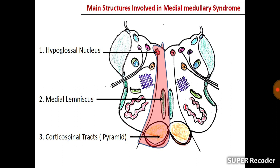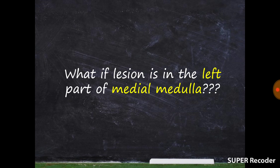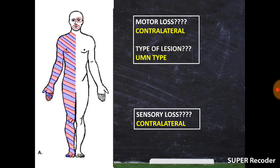Let's take a scenario: a lesion on the left side of the medial part of the medulla. The three structures involved from anterior to posterior are the pyramid, the medial lemniscus, and the hypoglossal nerve nucleus. Because the pyramid is involved, you'll get a motor deficit. Because the medullary pyramids are in the lower part of the medulla, a lesion on the left side affects fibers supplying the right side of the body, causing motor loss in the right upper and lower limbs.